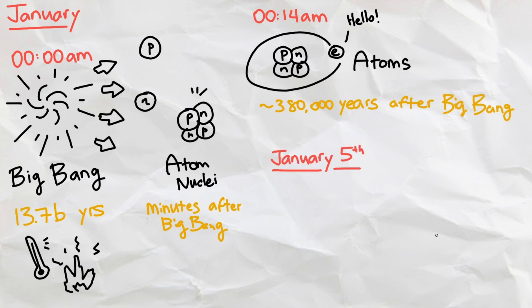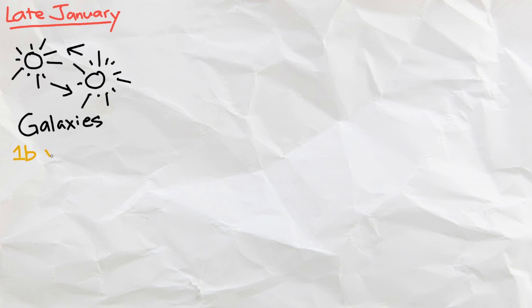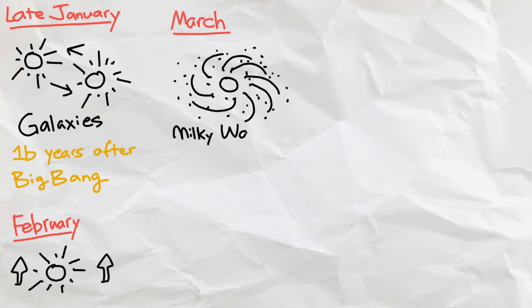On January 5th, the first stars formed as gravity pulled debris and gas floating around 200 to 400 million years after the Big Bang. As more and more stars formed, the first galaxies followed in late January as gravity pulled massive stars together around 1 billion years after the Big Bang.